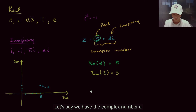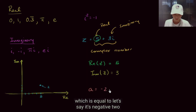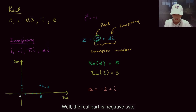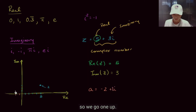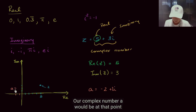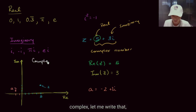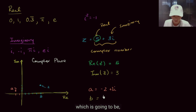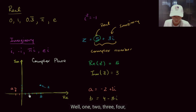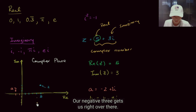We could plot other complex numbers too. For a = negative 2 plus i: the real part is negative 2 and the imaginary part is 1, so it goes to that point. For b = 4 minus 3i: going 4 in the real direction and negative 3 in the imaginary direction places it at that point on the complex plane.